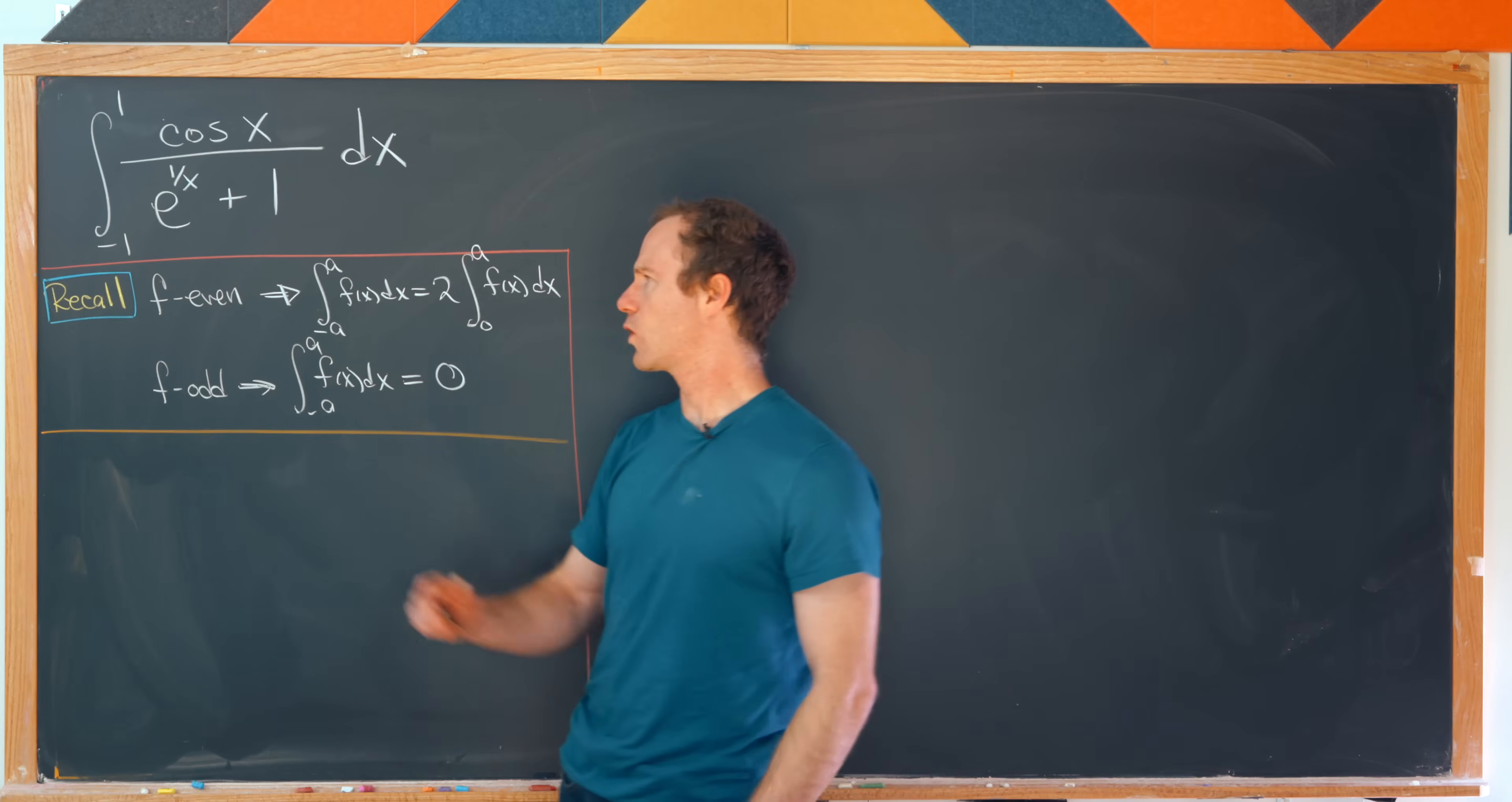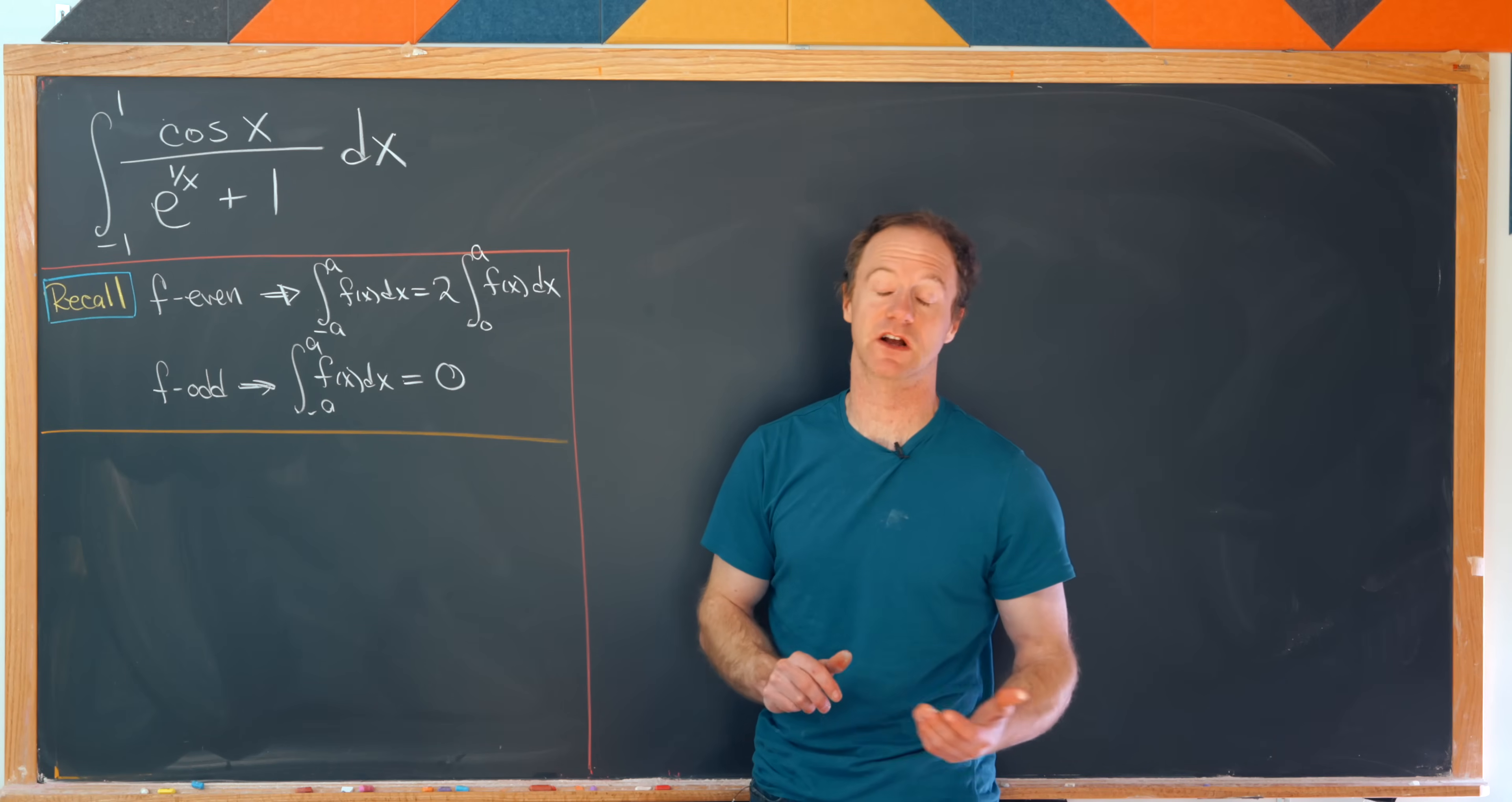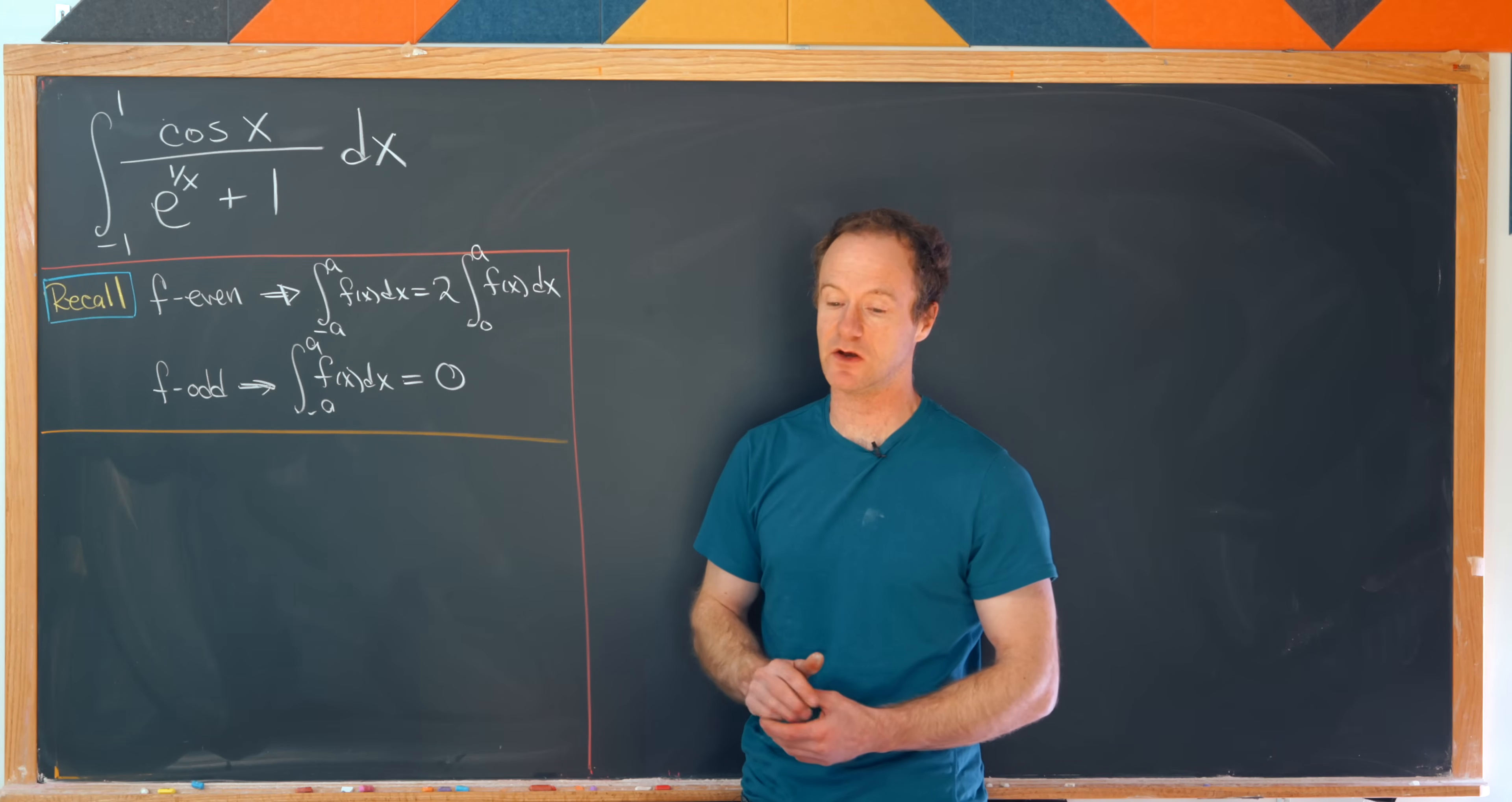Well, we can quickly check that this function here, cosine of x over e to the one over x plus one, is neither even nor odd.